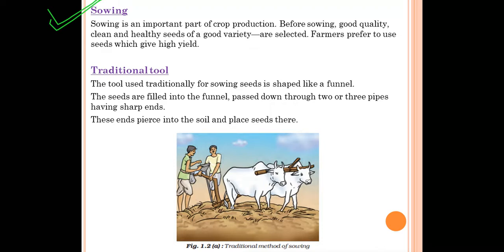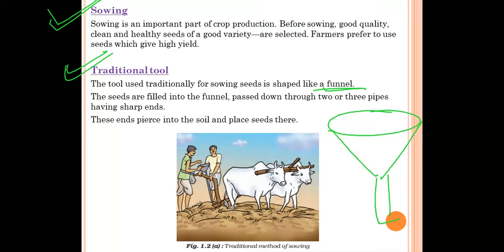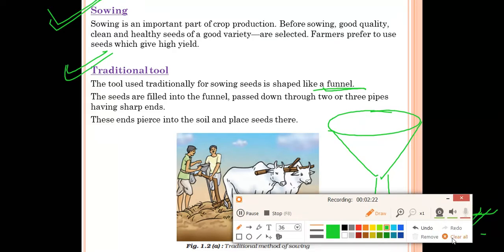Now we are talking about traditional tools used in the past for sowing seeds in agriculture. The traditional tool used for sowing seeds is shaped like a funnel. The seeds are filled in the funnel and then passed down through two or three pipes having sharp ends. These ends pierce into the soil and place the seeds there, allowing farmers to sow seeds into the ground.